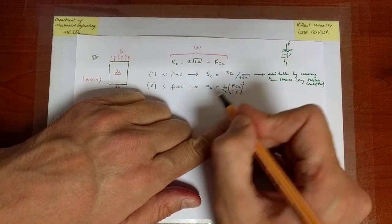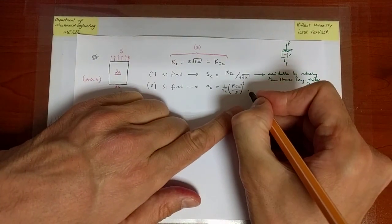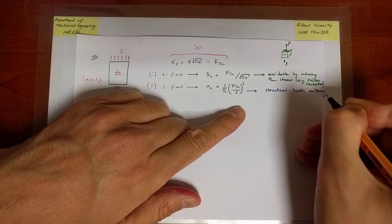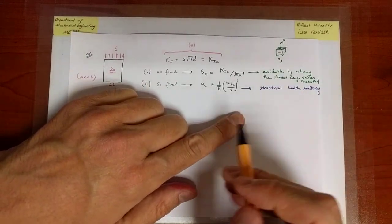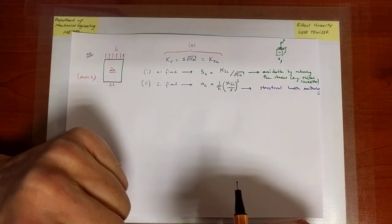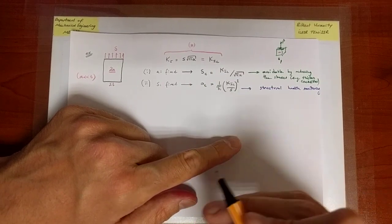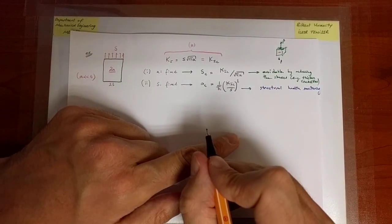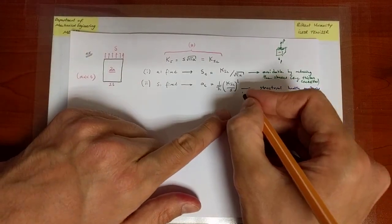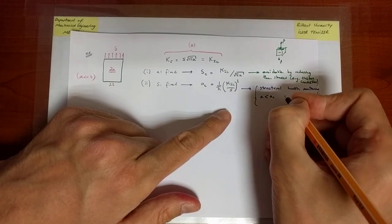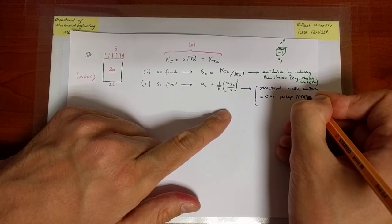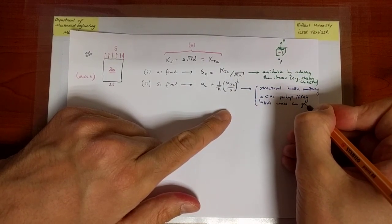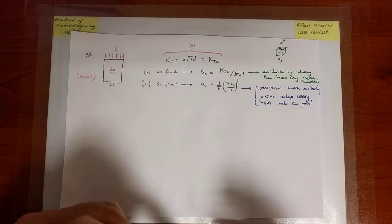That is why we need to know the critical crack size a structure can sustain, so we can carefully monitor the crack size present in a structure — as is done for bridges and airplanes. Structural health monitoring addresses the issue that although A may initially be less than AC, cracks can grow, so we need to know the largest crack size the structure can sustain.